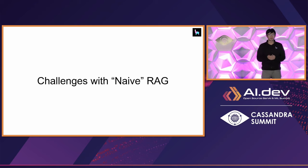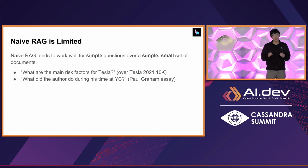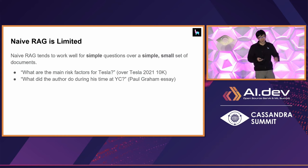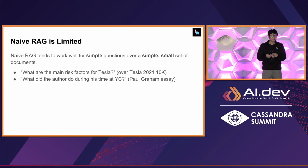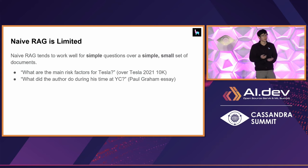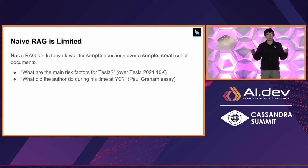Many of you might have already built RAG pipelines, either on your own or as part of a company effort. This is one of the biggest enterprise use cases this year. But there are a lot of challenges in building RAG — naive RAG is limited. If you just put stuff in a vector database and use very basic retrieval strategies, it tends to work well only for simple questions over a constrained set of documents, like asking for risk factors in a Tesla 10-K or what an author did during their time at YC.